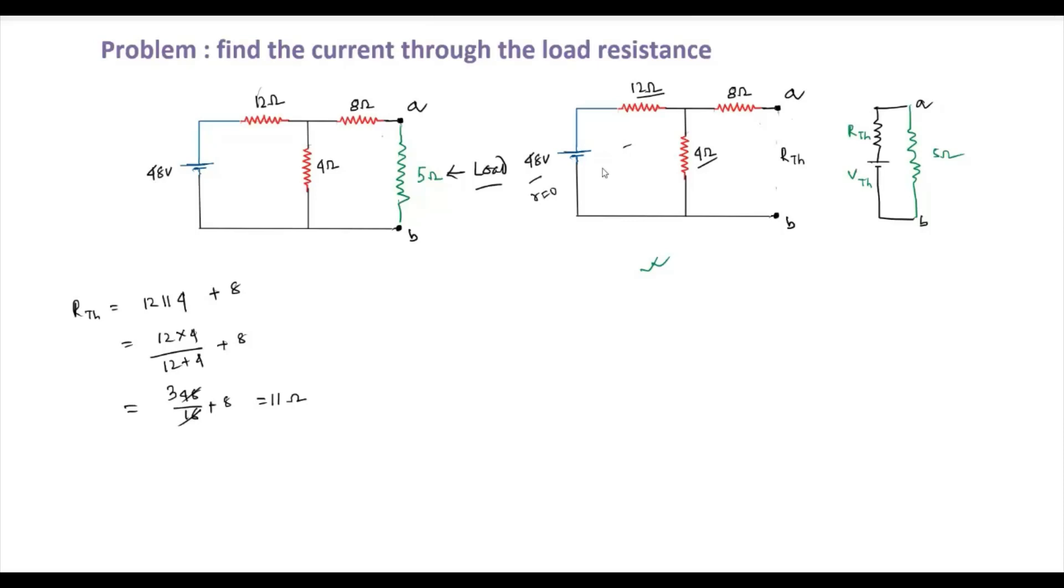Now for VTH, we find the open circuit voltage across terminals A and B. With the open terminal, we have current I flowing through the 8 ohm resistor. The current I equals 48 divided by 12 plus 4. Since R equals zero for the source, I equals 48 by 16 equals 3 amperes.